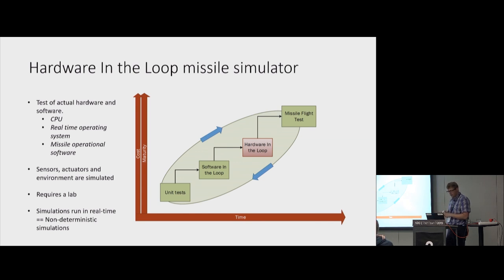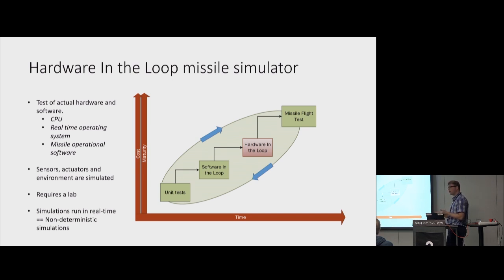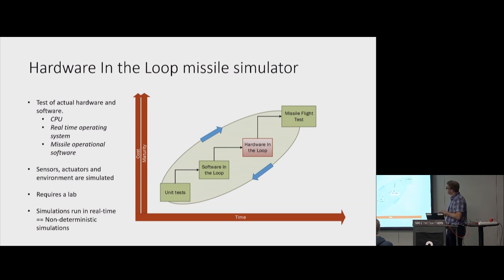A little bit about hardware-in-the-loop simulators. That is where we take the actual hardware from the missile, lay it out, and apply simulated sensors, simulate the actuators and the environment. The benefit is that we have the actual hardware present, the actual operating system running, and the complete software stack running on the target. This is the only real place where you can discover real timing issues in your software, but it requires a lab and is a pretty complex piece of equipment.